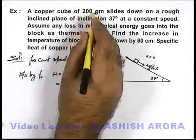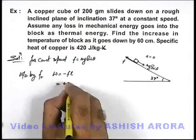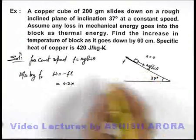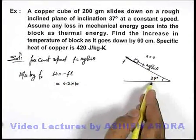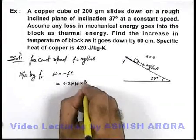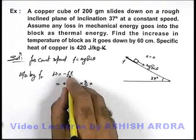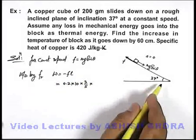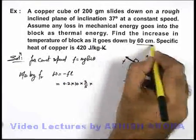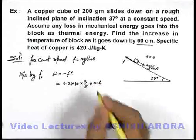The mass of the block is 200 grams, so it is 0.2 kg. g we take as 10, sin 37° as 3/5, multiplied by the length along the incline which is 60 cm or 0.6 m.